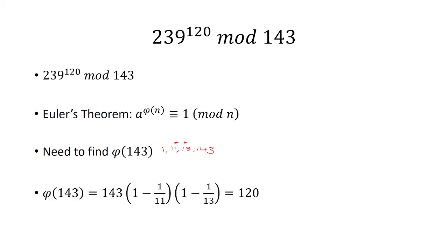So here we put 143 outside, and then we do 1 minus 1 over p. So the first prime is 11, and then the second prime is 13. Multiply this whole expression, and we get 120.